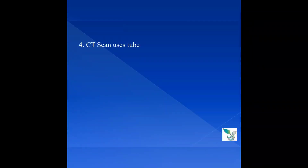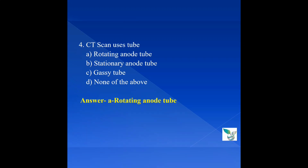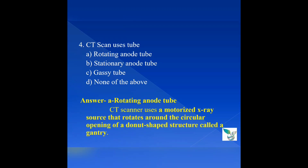Question 4: CT scan uses which tube? Option A: Rotating Anode Tube, Option B: Stationary Anode Tube, Option C: Glassy Tube, Option D: Stannav Devo. The answer is Option A: Rotating Anode Tube. A CT scanner uses a motorized X-ray source that rotates around the circular opening of a donut-shaped structure called the gantry. The X-ray tube and the detector continuously rotate around the patient, and inside the CT tube the anode is of rotating type.